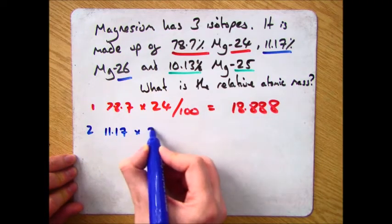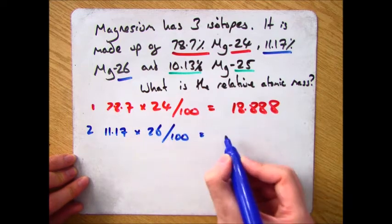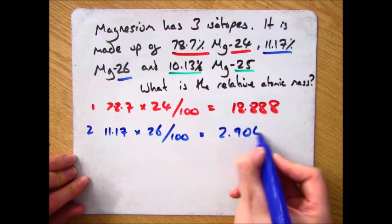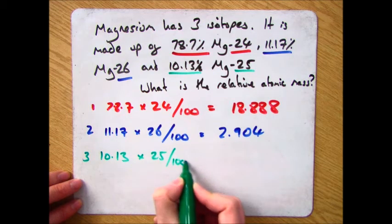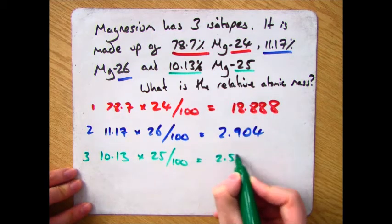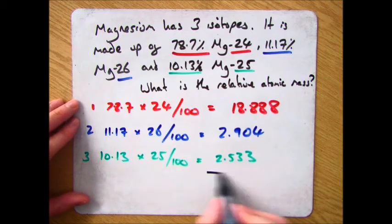Number two was 11.17 times by 26 divide all that by 100 and that comes out at 2.904. And then you've got 10.13 times by 25 divided by 100 and that comes out to 2.533.